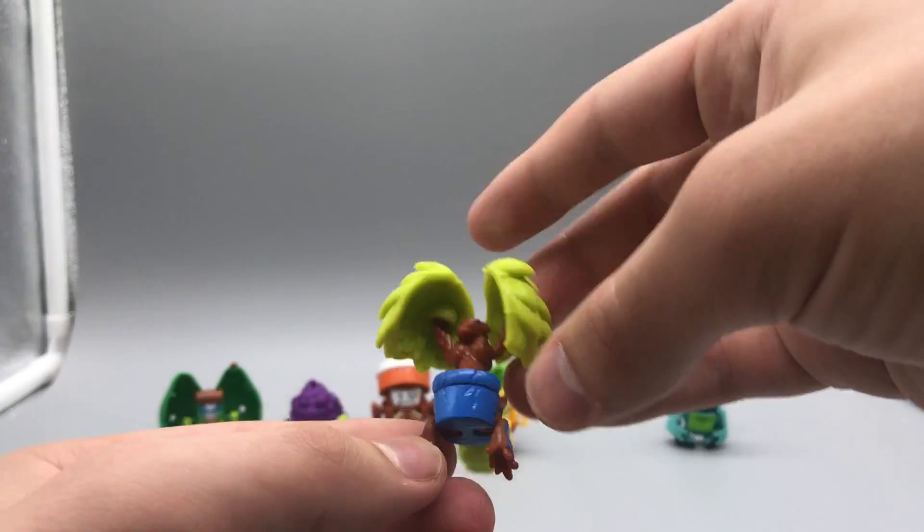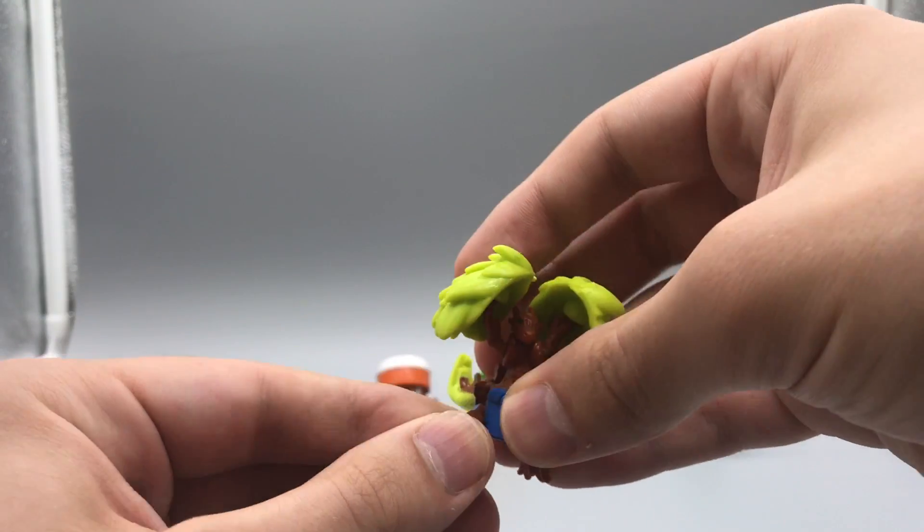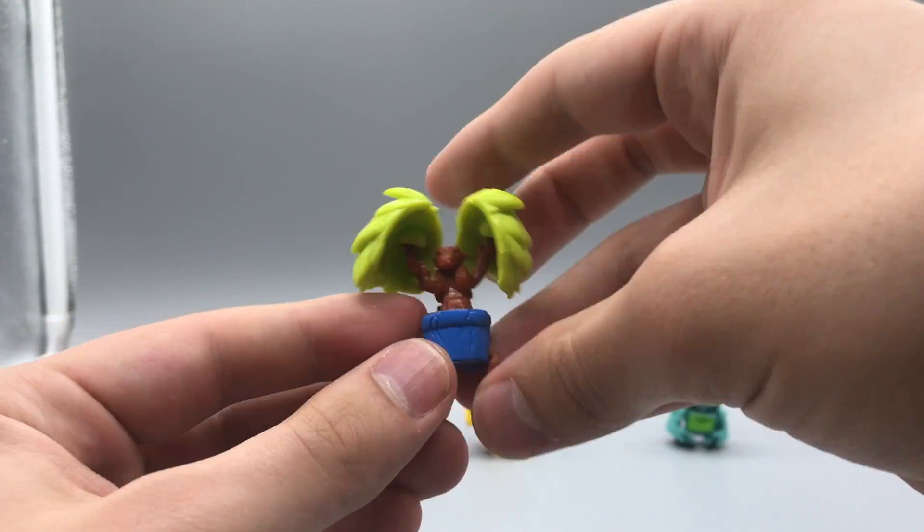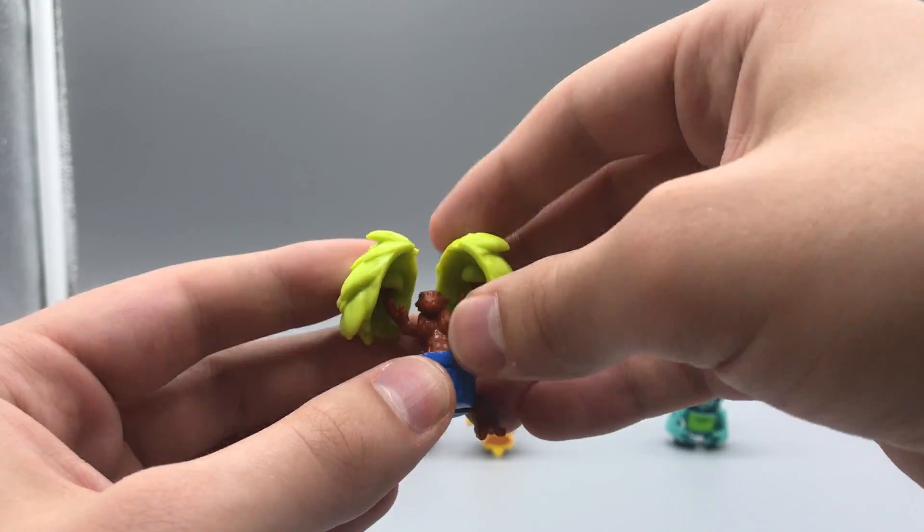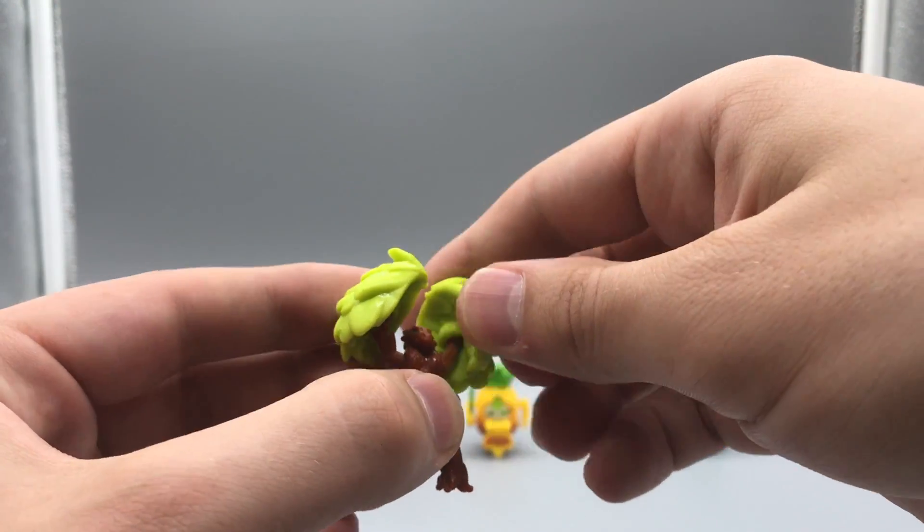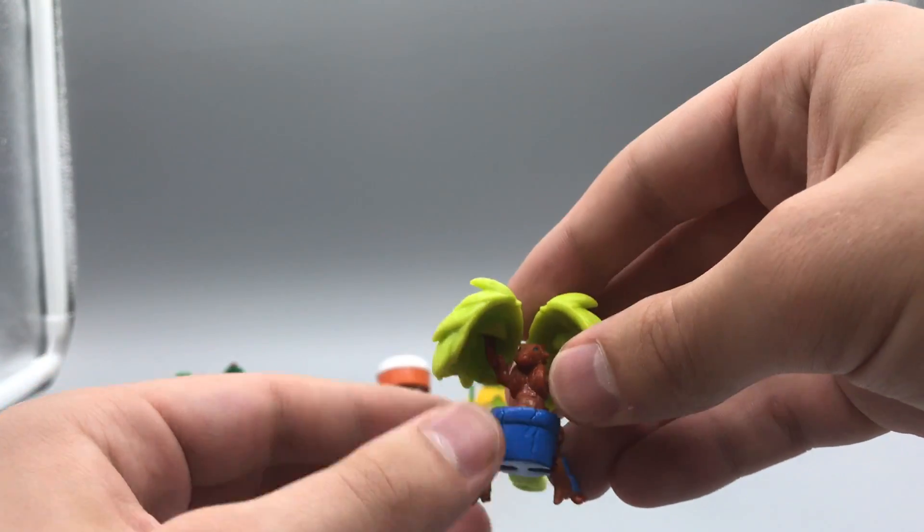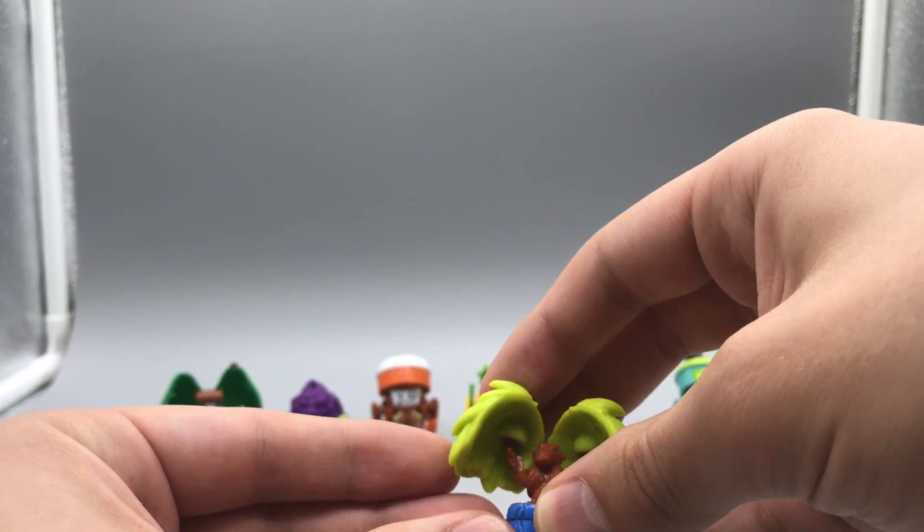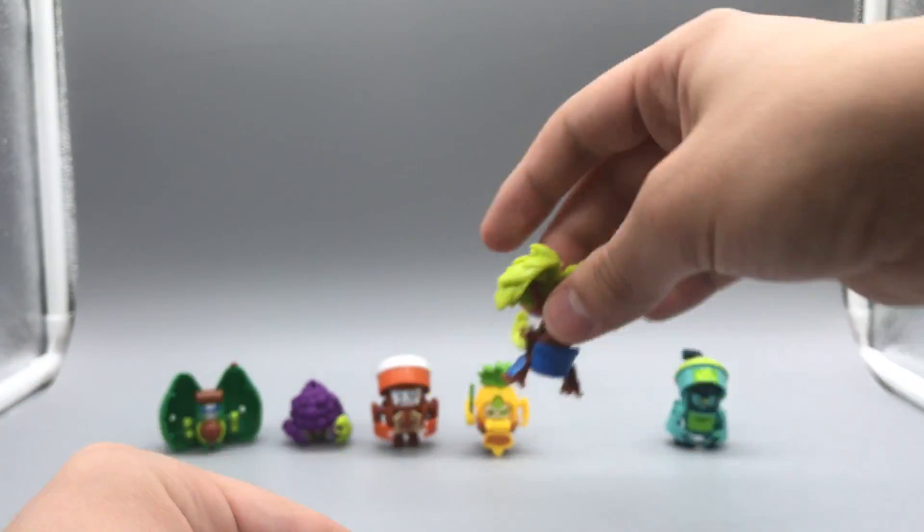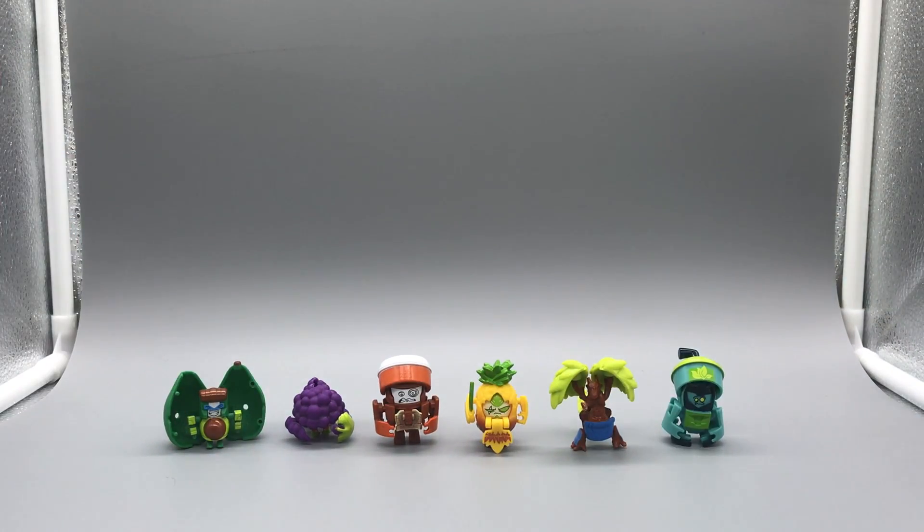And I did forget to briefly talk about Smerg the Sad's articulation. Legs are on ball joints. Here, torso bits are on ball joints as well as the ends of the wings. So they're on ball joints and this is on a hinge. So you can do a little bit of posing with Smerg the Sad. And that is everything to say about the fresh squeezes.